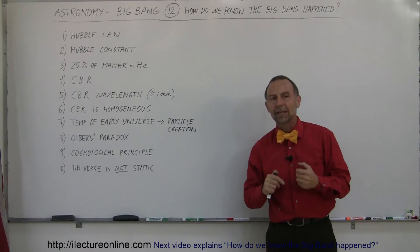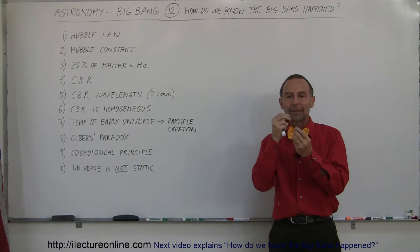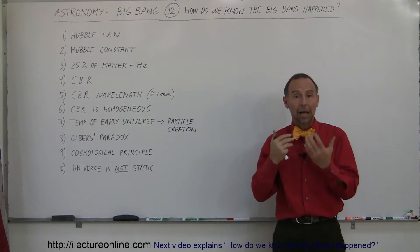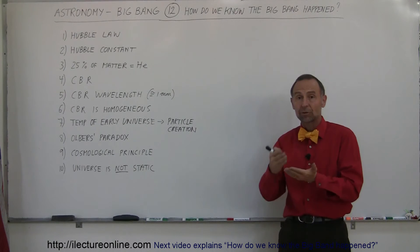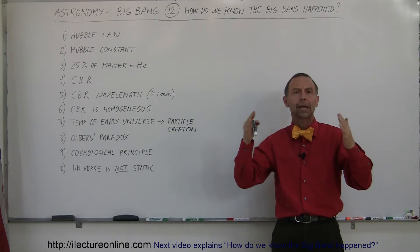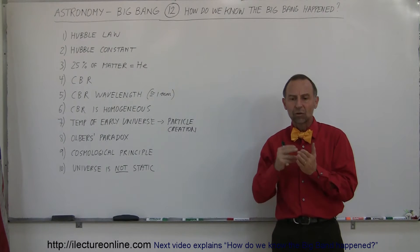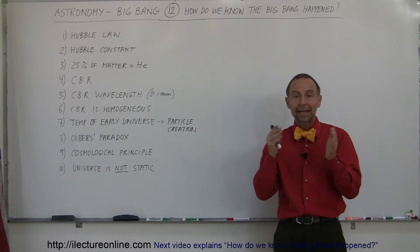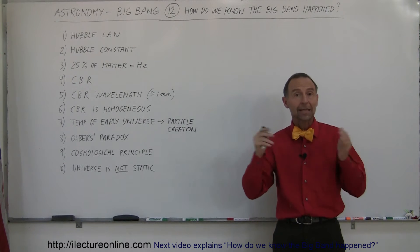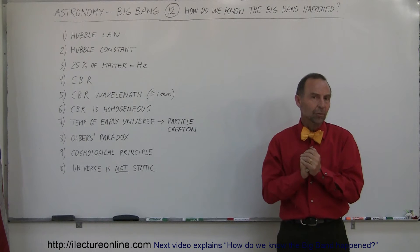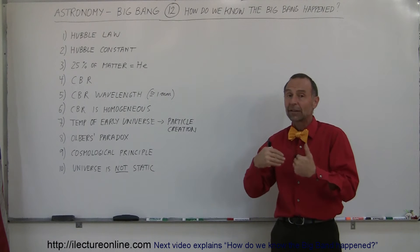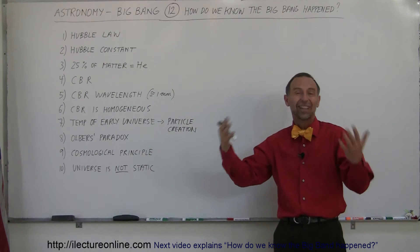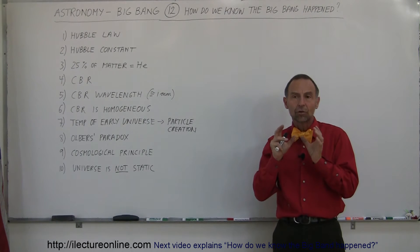Hubble constant is the constant that mathematically describes or indicates how fast the universe is expanding, and now we know that it's about 73 kilometers per second for every one megaparsec of space. If we then take the inverse of that constant, one over H, then it tells us how long it's been expanding like that. Now there's some fine adjustments that need to be made, because later on we found out that the universe expansion is actually increasing, the expansion is accelerating.